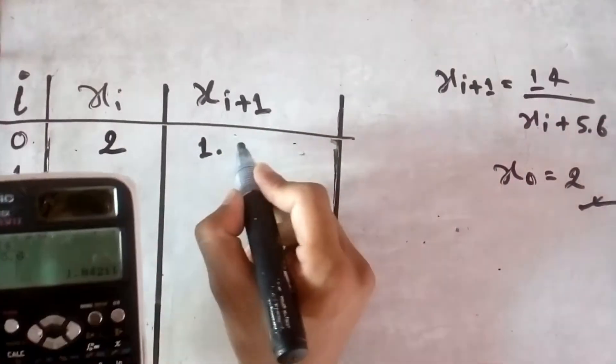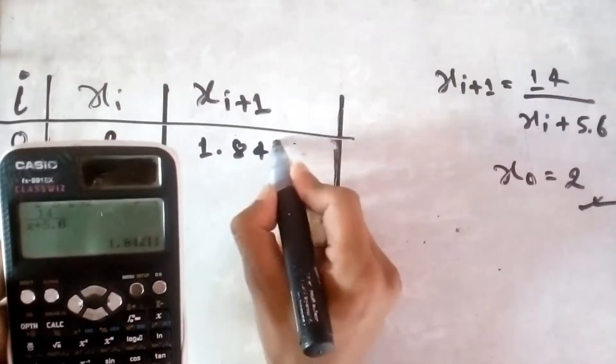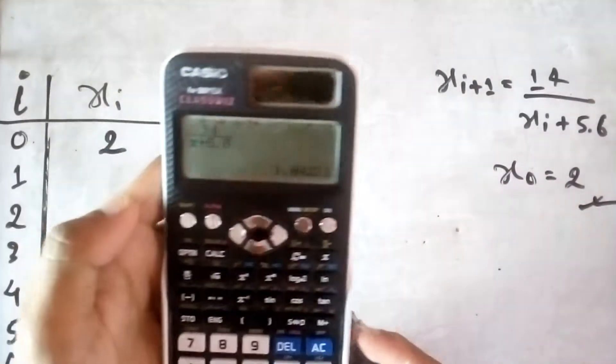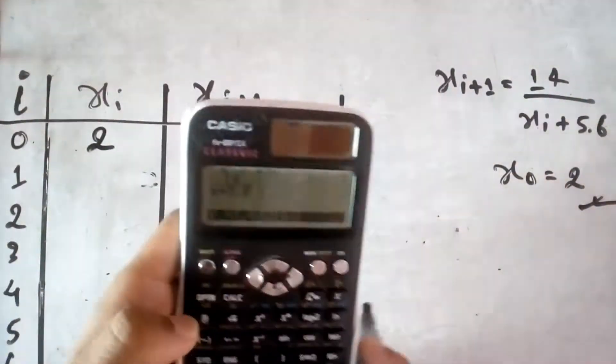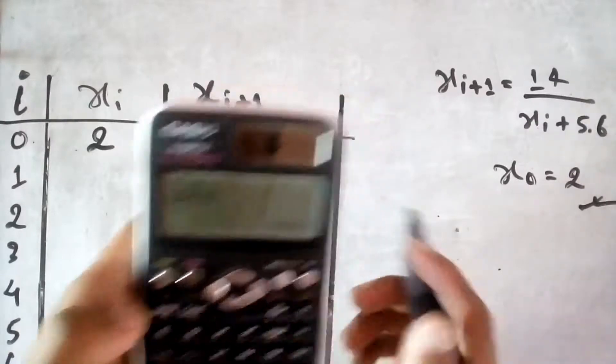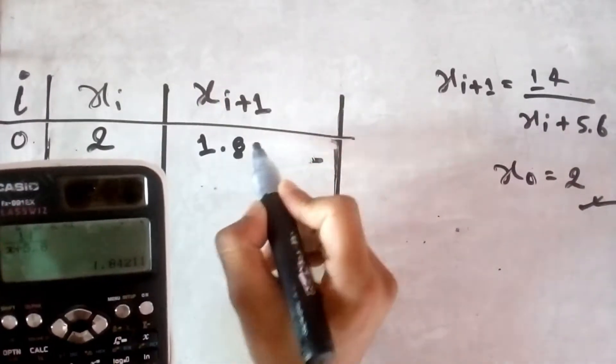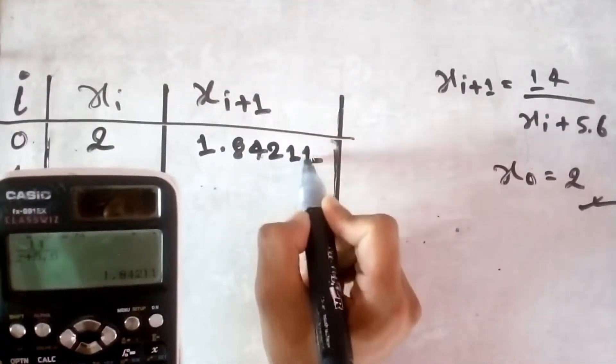If you assume 2, you get 1.84211. If you assume 2, what you get? You will get 1.84211.